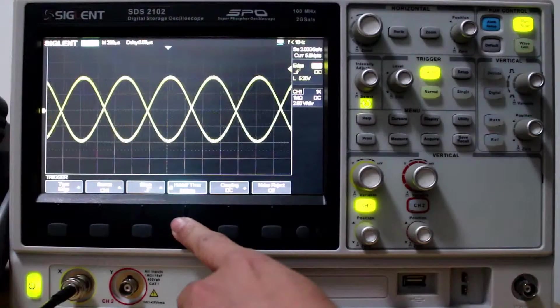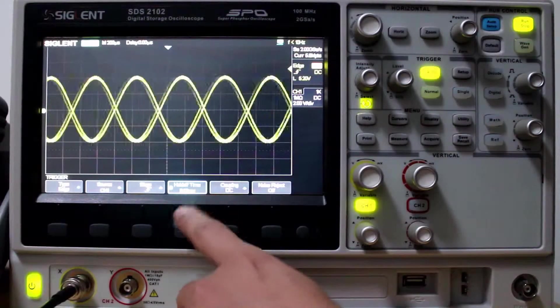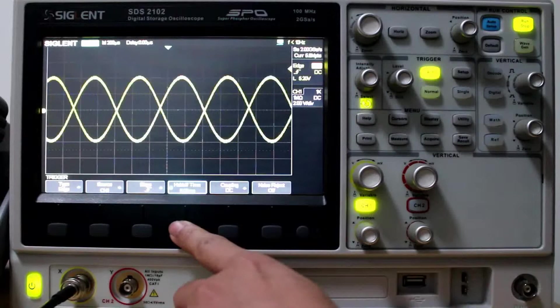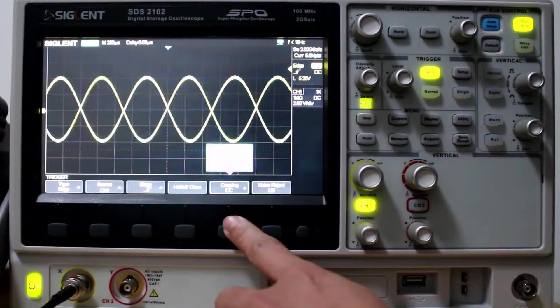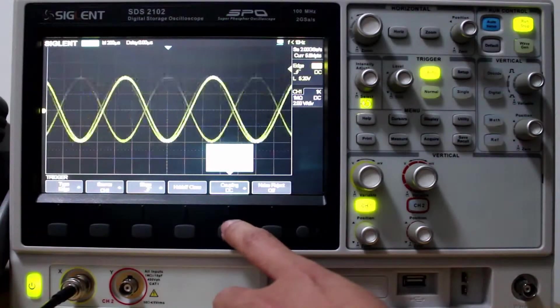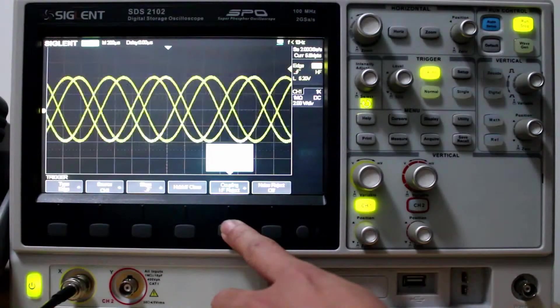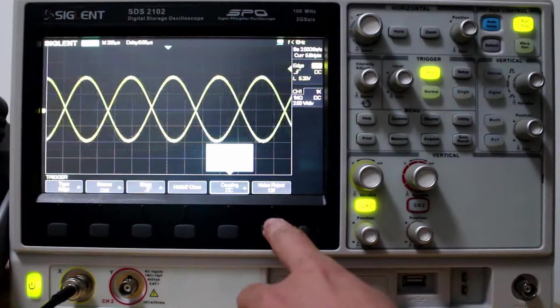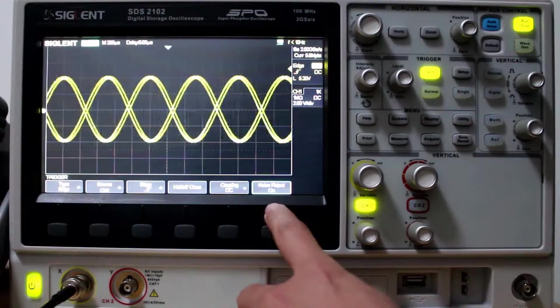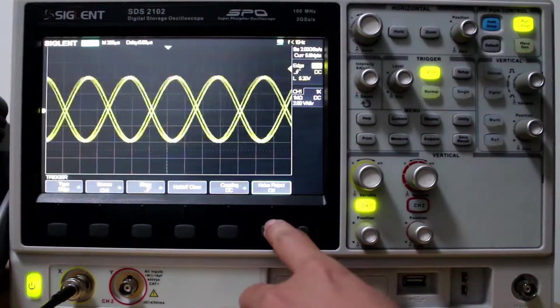We can set the Hold Off, which is pretty much the delay between triggers. So we turn that off. Coupling. We can have DC, AC. We can have Low Frequency Reject, or High Frequency Reject. We'll set it to DC. And there's also a Noise Reject option, On or Off.